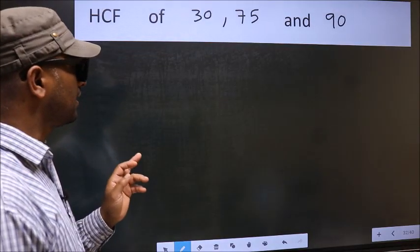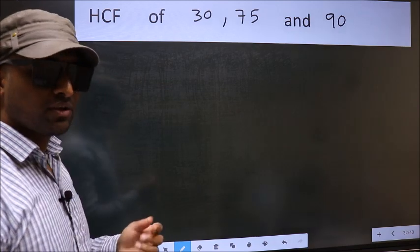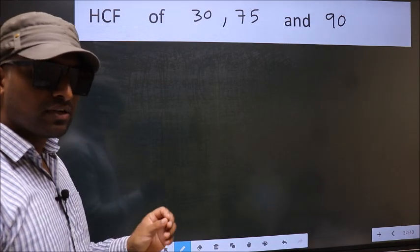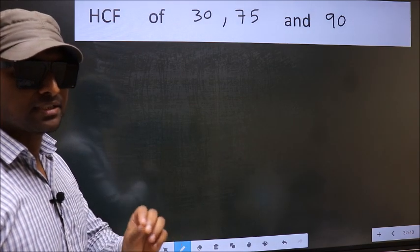HCF of 30, 75 and 90. To find the HCF, we should do the prime factorization of each number separately.